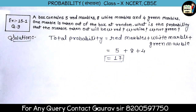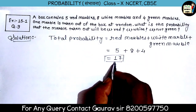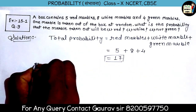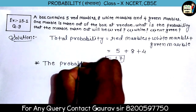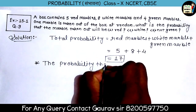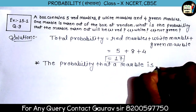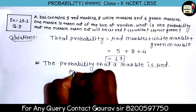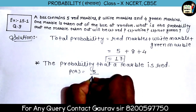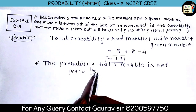So total outcomes = 17. Now we find the probability of drawing a red marble. Red marbles available: 5. Total probability (total outcomes): 17. So the probability that a marble is red = 5 upon 17. Using the formula: favorable outcomes upon total outcomes — favorable here is 5, and total is 17 in the denominator.